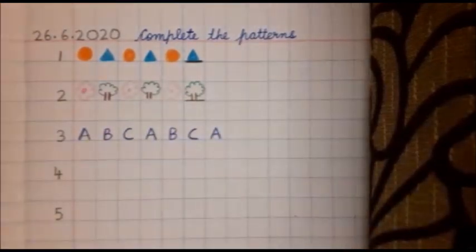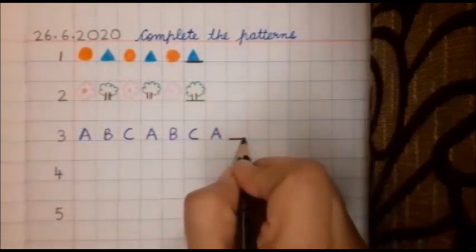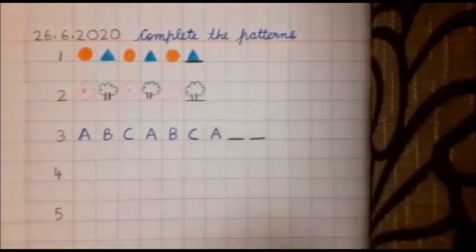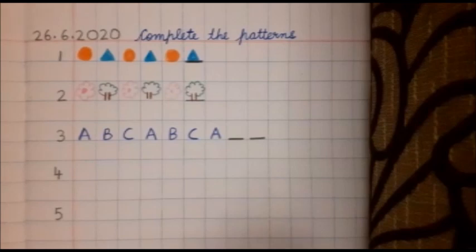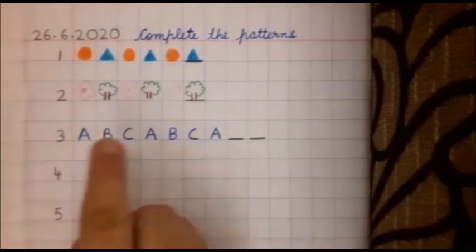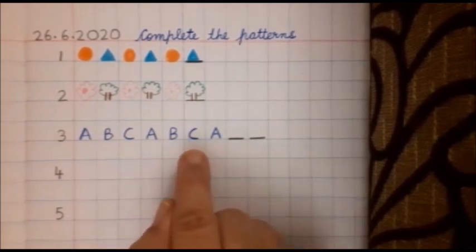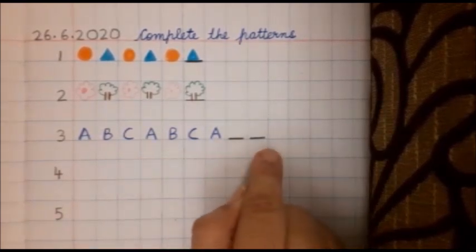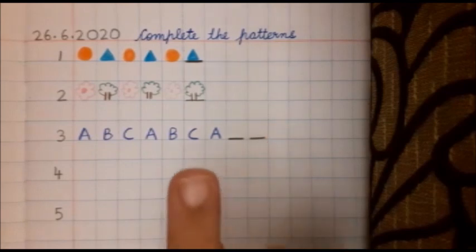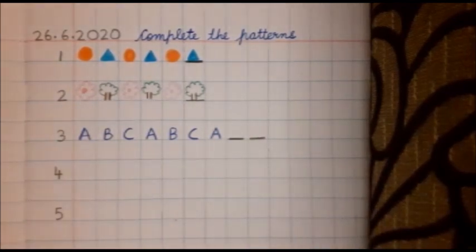Now Anubha ma'am is going to put a dash. This you have to do it yourself. Anubha ma'am will not tell you. See the pattern: A, B, C, A, B, C, A, B, C. A, B, C.